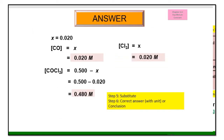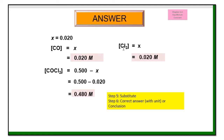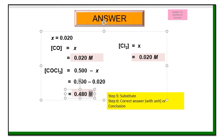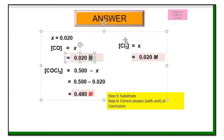Since we successfully found x, substitute into the equilibrium expressions. The concentration of CO and Cl2 are both equal to x, and the concentration of COCl2 is 0.5 minus x. Write the correct final answers with the unit — concentration, so the unit is molar, capital M. Don't forget.